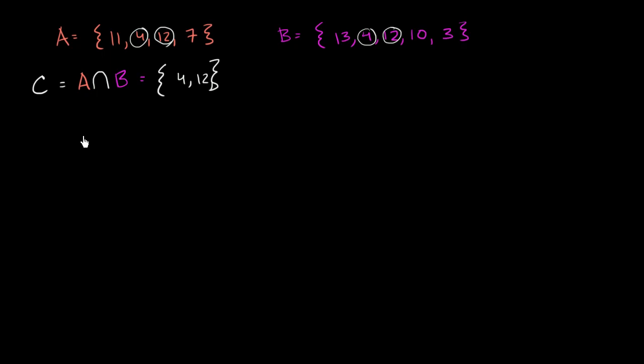Now let's think about union. Let's think about A union B. What are all the elements that are in A or B? Well, we can just literally put all the elements in A: 11, 4, 12, 7. And then put the things in B that aren't already in A. So let's see, 13. We already put the 4 and the 12, a 10, and a 3. And I could write this in any order I want. We don't care about order if we're thinking about a set. So this right here is the union.